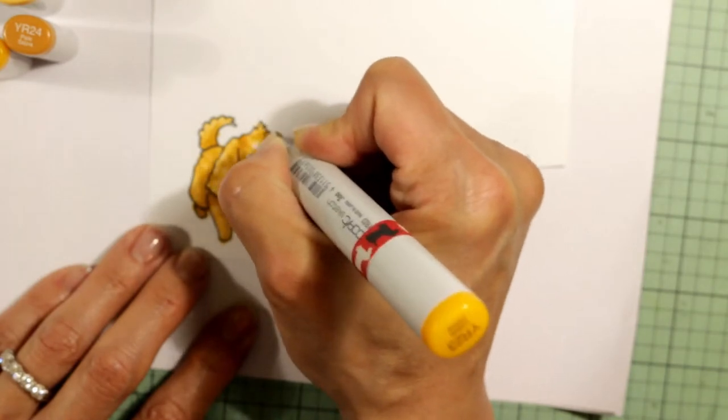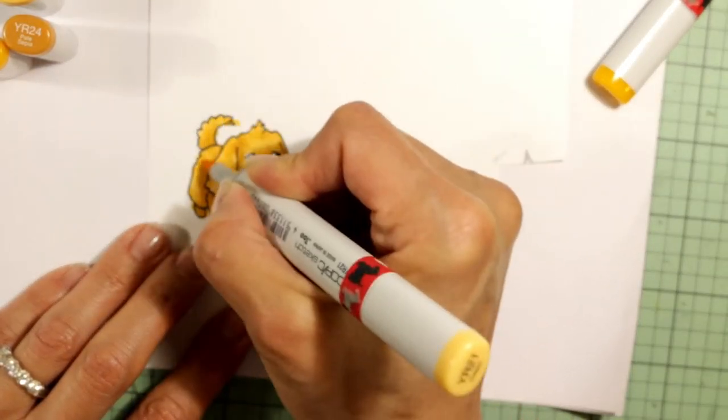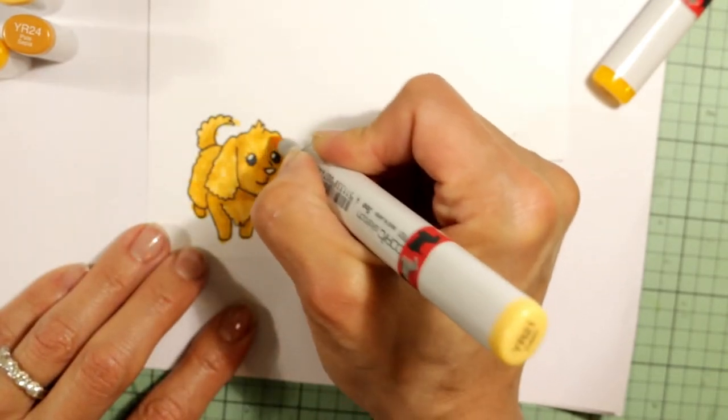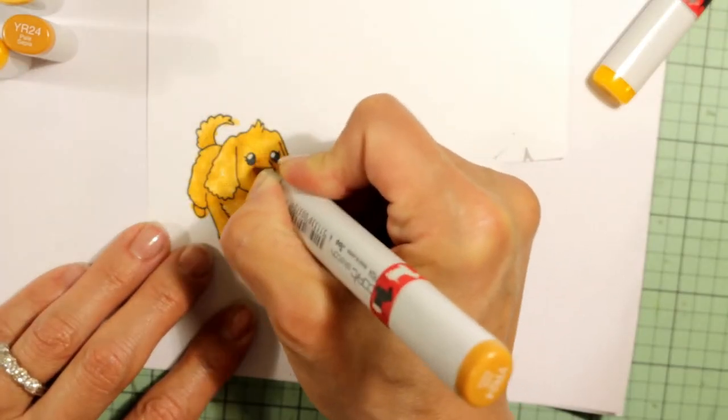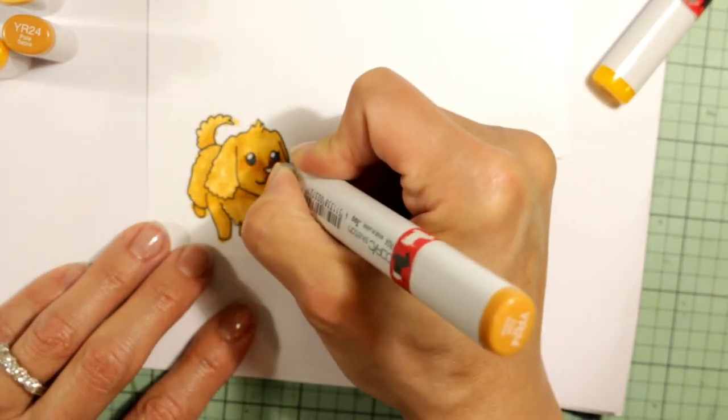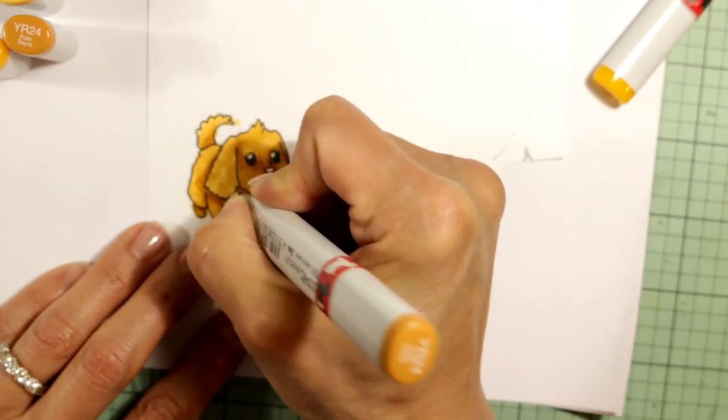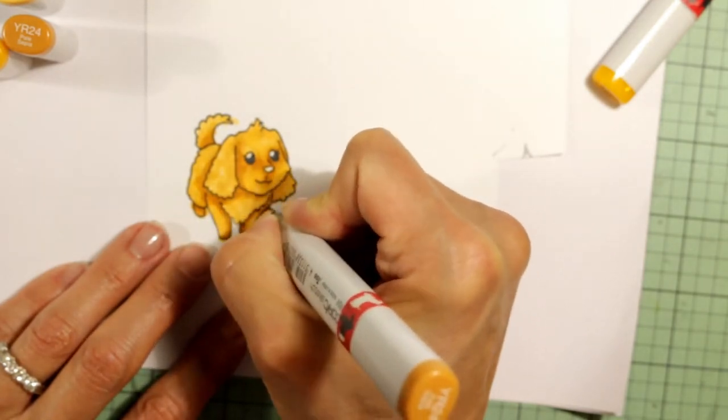I'm using a YR 21, 23, and 24. If you're interested in any of the other colors that I use or any of the details for this coloring or for the assembly of this card, please check out my blog post which is linked in the description box below.